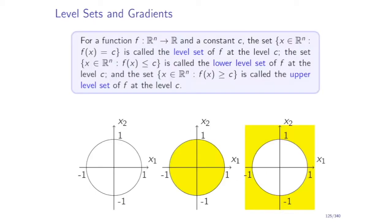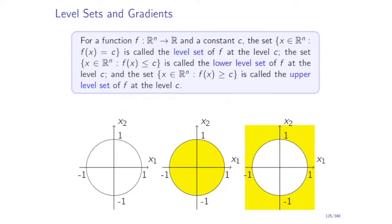Let's revisit this definition for the function x1² + x2². The level set for level c = 1 is just this circle — the set of points where x1² + x2² = 1. The lower level set contains the points inside the circle, where x1² + x2² ≤ 1, together with the boundary. The upper level set is the set of points outside the circle, including the boundary.